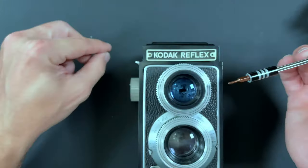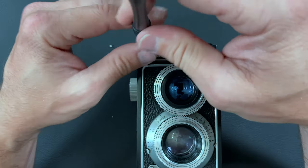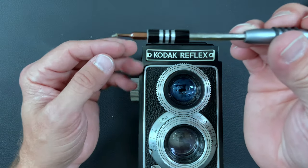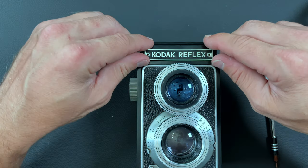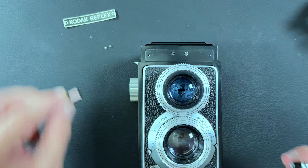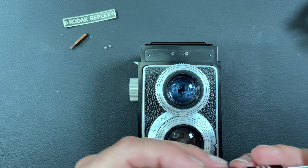They are super tiny. Take those guys off. And then the badge will just lift right off. And now you can see there's two flat head screws there. We're going to take those guys out now.